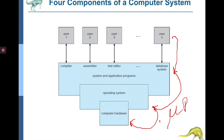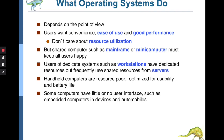We will go into more detail on how instructions are run, though our focus is the operating system rather than the hardware itself. An operating system gives the user convenience, ease of use, and good performance. In shared computer systems such as mainframes or minicomputers, the OS keeps all users happy. Users of dedicated systems such as workstations have dedicated resources but frequently use shared resources from servers.